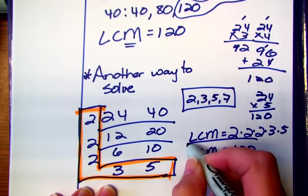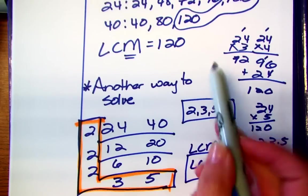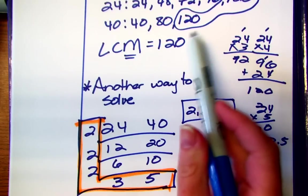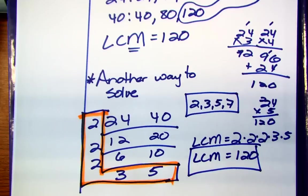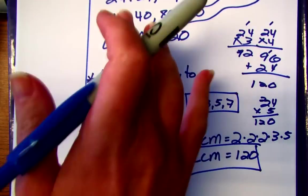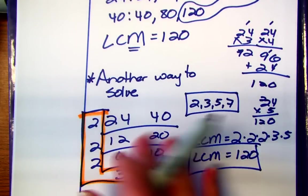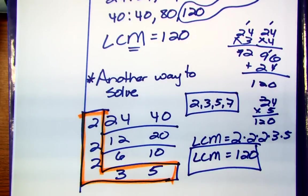Okay again notice it's the same thing as we got up here by listing them out. This is just another way that people like that's kind of structured. If you like this way do that. It really works nicely if you have more than 2 numbers and we'll practice those. Bye Burss!